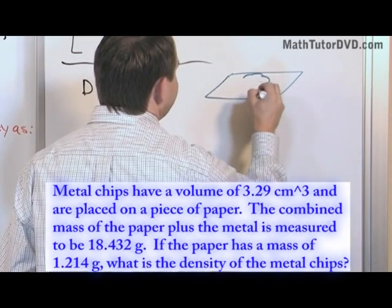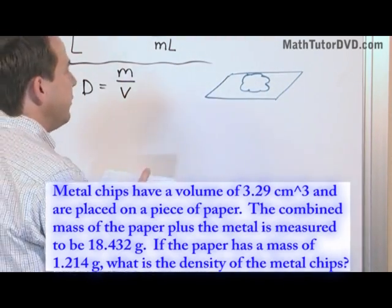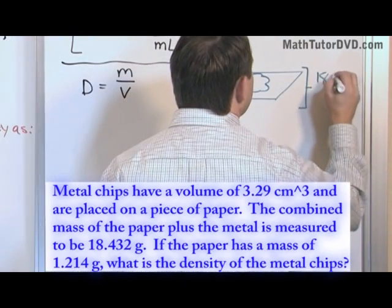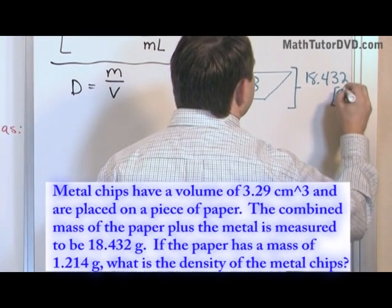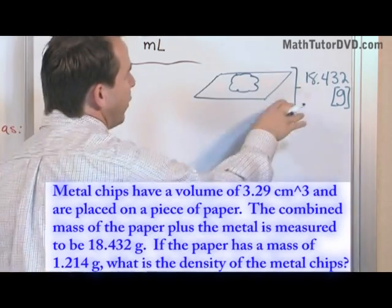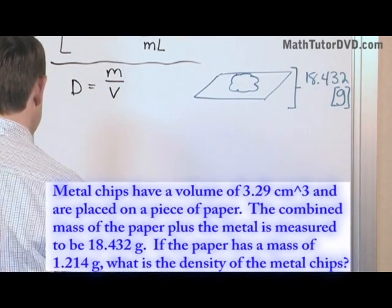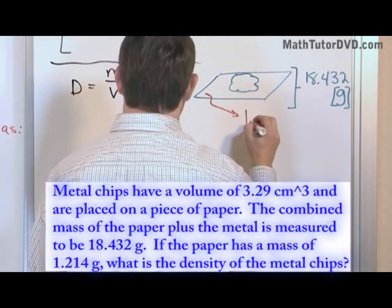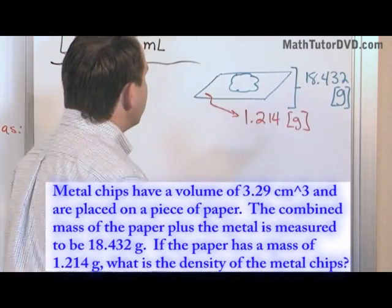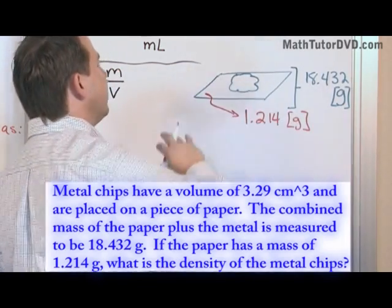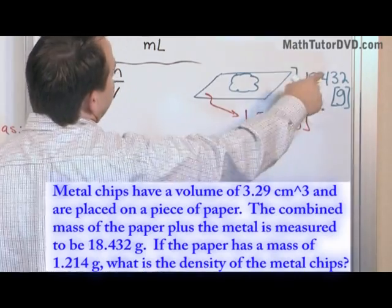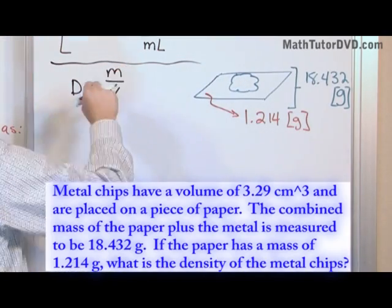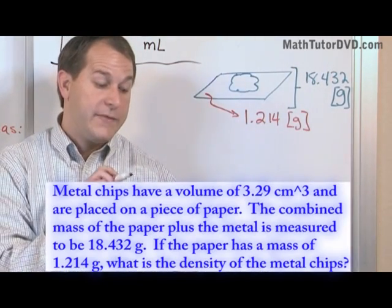Here's a piece of paper, and here are some metal chips on top. The mass of these two things combined is 18.432 grams. I'll put grams in brackets so you don't get confused — 18.432 grams is the combined mass. We also know that the paper by itself has a mass of 1.214 grams. So if we know the mass of the paper and the combined mass, all we need to do is subtract the two numbers to find the mass of the metal chips.